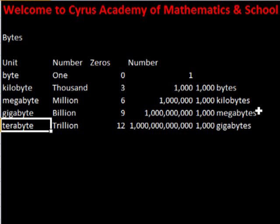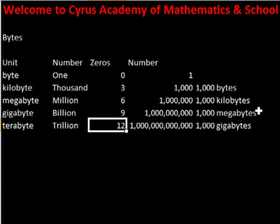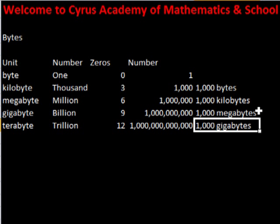Next is the terabyte. It has a trillion bytes in it. It has twelve zeros. And it has a thousand gigabytes. See you in the next video.